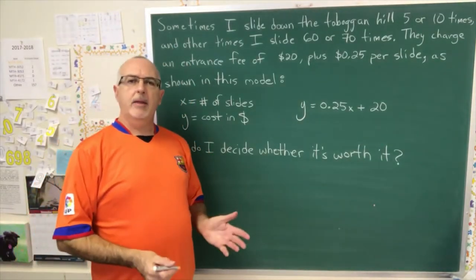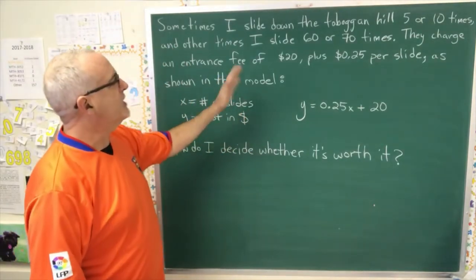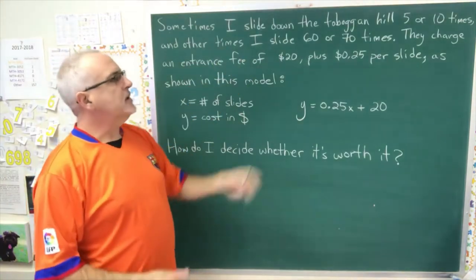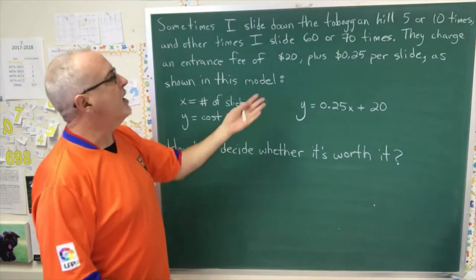In today's Daily Dose of Math, we're looking at this situation that involves a toboggan hill. Sometimes when I go sliding on the toboggan, I only want to slide 5 or 10 times.